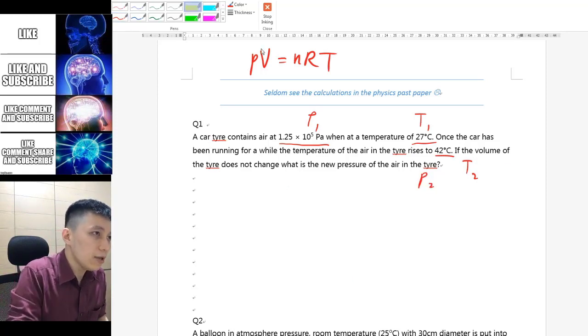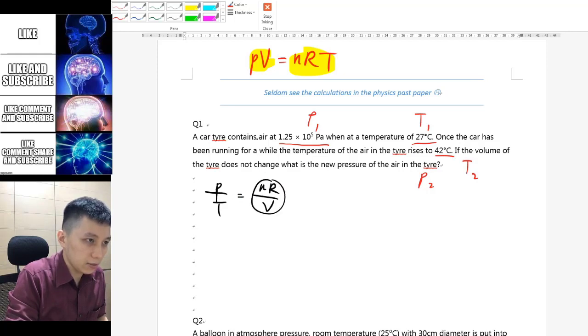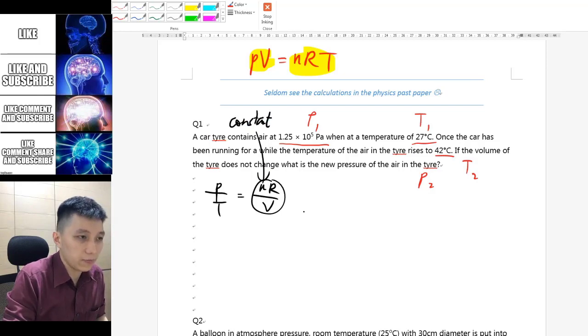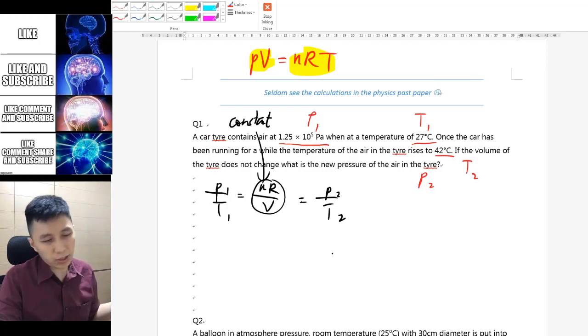From the equation you can see that since the volume doesn't change, what you get is P over T equals to nR over V. In fact this is a constant in this question, and that will equal to another P over T, which is P1/T1 equals P2/T2.